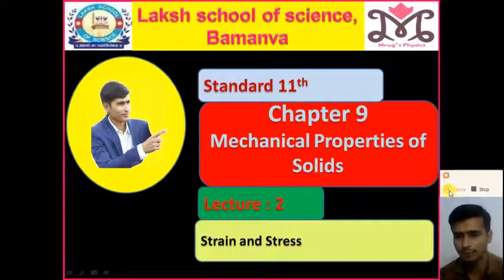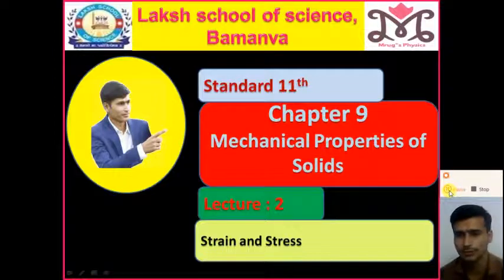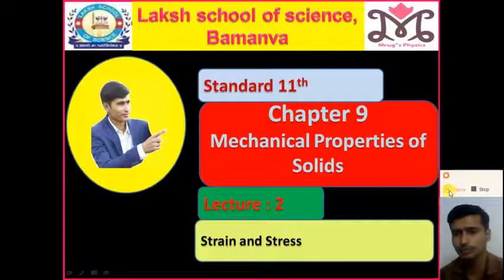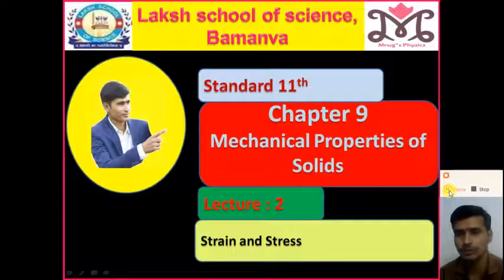When we apply a deforming force, the dimension of the body — like length, volume, and shape — will change. The physical quantity associated with this change in dimension is called the strain. And when we remove the applied force, the body will try to regain its original position because of the restoring force produced in the body. The physical quantity associated with the restoring force is stress. In this video, we will discuss about strain and stress.